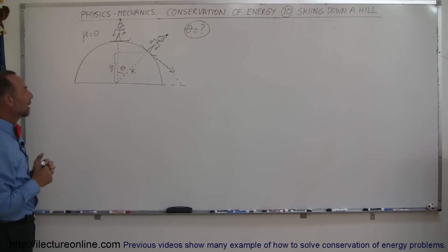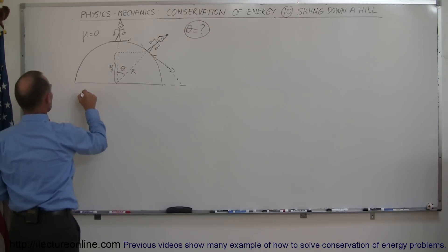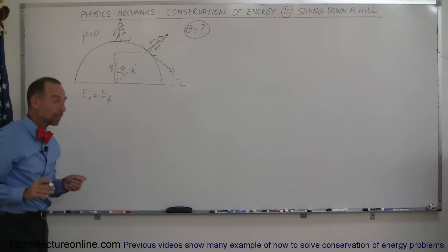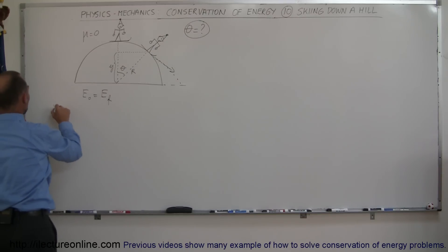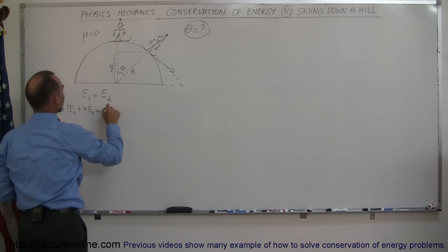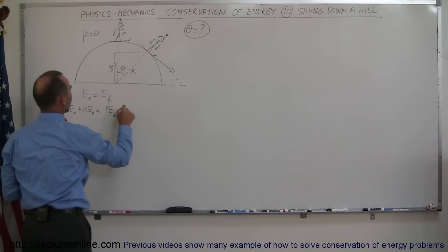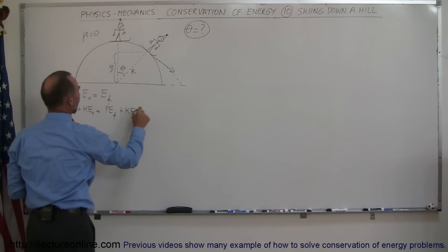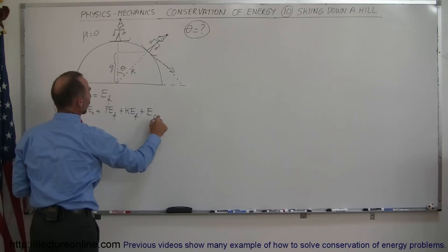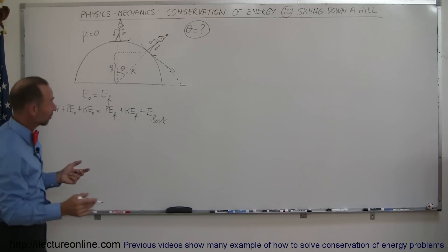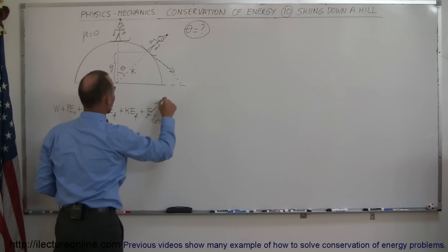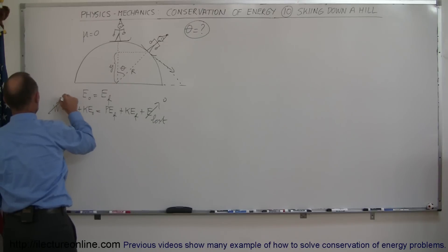So we're going to start off by starting with the equation of energy. Energy initial equals energy final, so we call that the conservation of energy equation. Now we know that there might be some potential work input, plus some potential energy initial, plus some kinetic energy initial, and that should equal the potential energy final, plus the kinetic energy final, plus any energy lost due to overcoming friction. Now right away we can say, since there's no friction here, then we can call that zero, and there was no work input, call that zero as well.